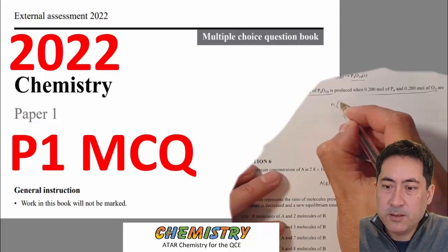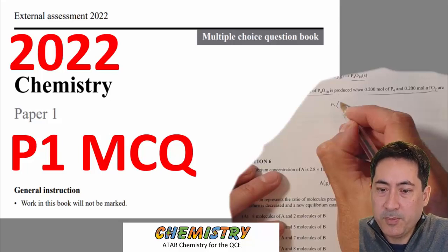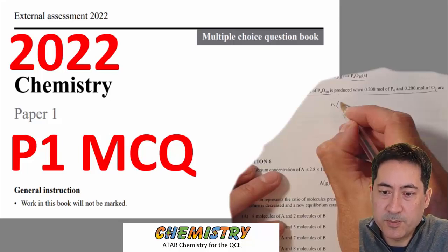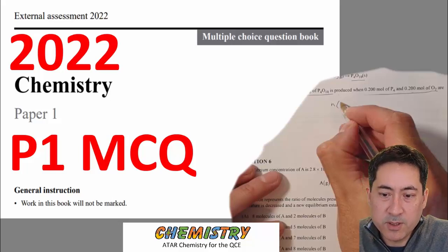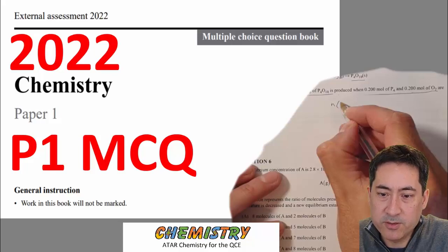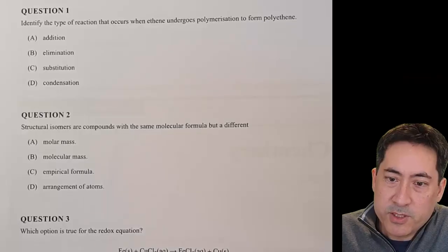This is the 2022 paper — the multiple choice section. If you want to jump to the question you want, there are timestamps, so you can jump straight to the question you're interested in.